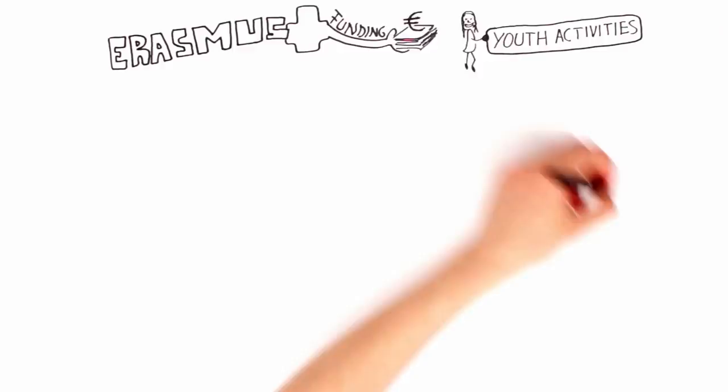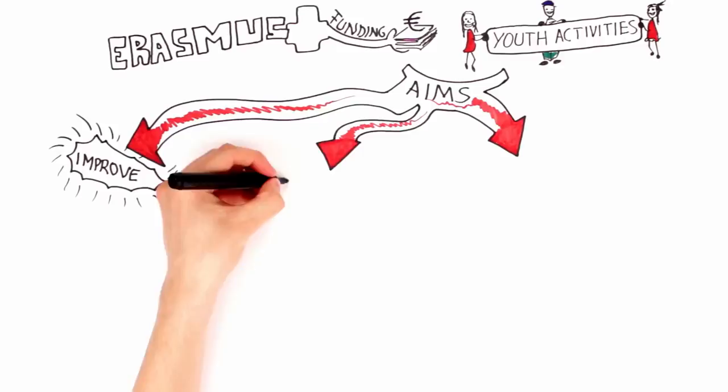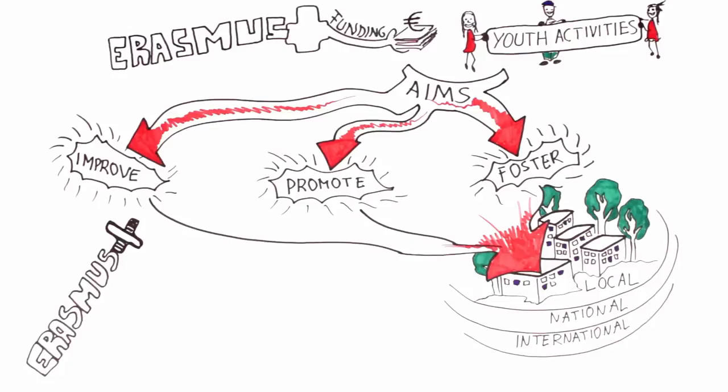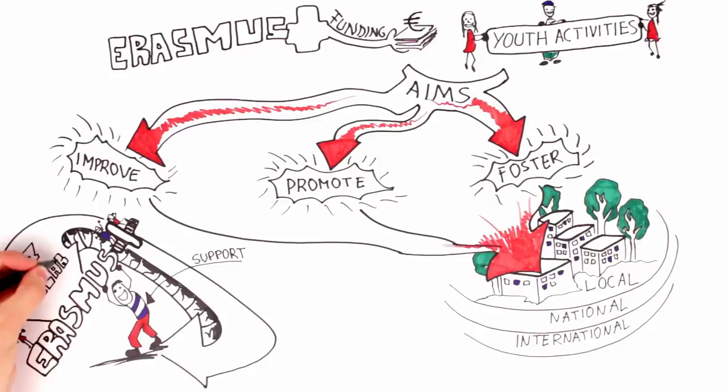Funding for youth activities under Erasmus Plus aims to improve different competences and improve the employability of young people, promote young people's social inclusion and wellbeing and foster improvements in youth work and youth policy at local, national and international level. One billion six hundred million euros is allocated to support projects within the youth field of Erasmus Plus program over the seven years.